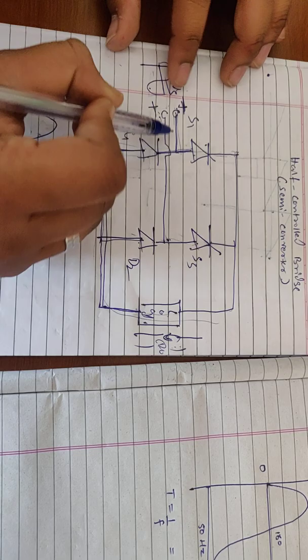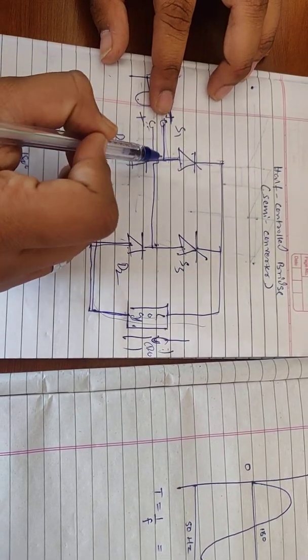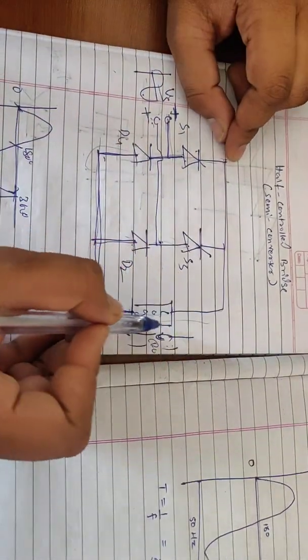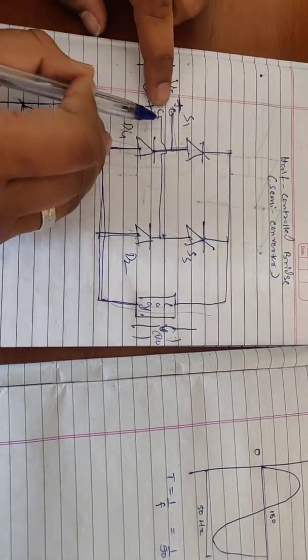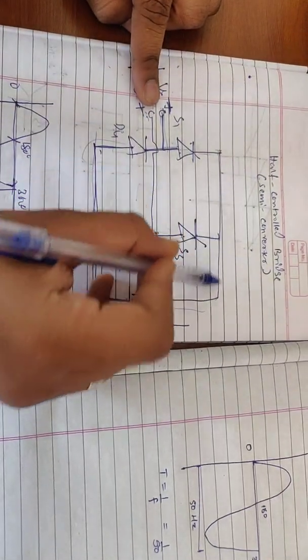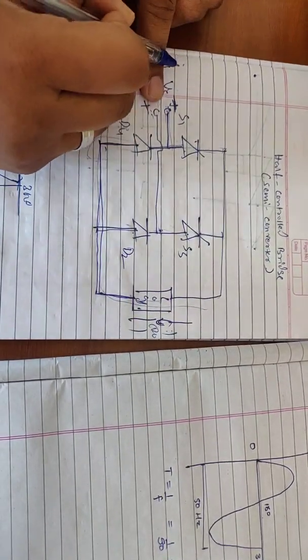When the positive cycle is there then the current flows from positive to negative through S1 then to load then goes to D2 and then to the negative terminal. In reverse bias it goes from S3 then the load then D4 and then the negative.